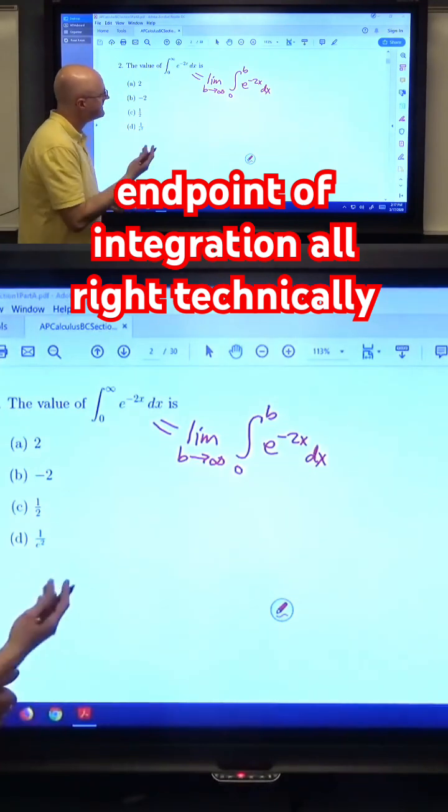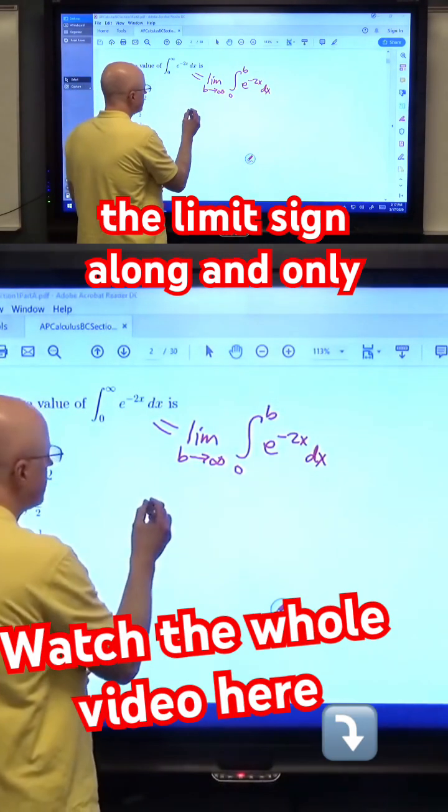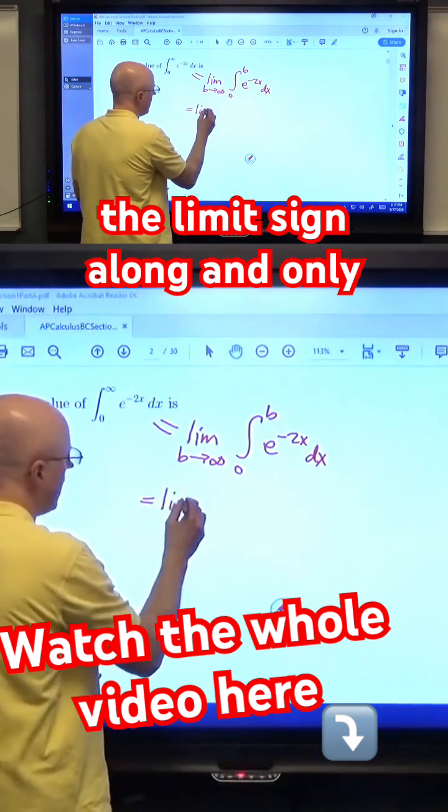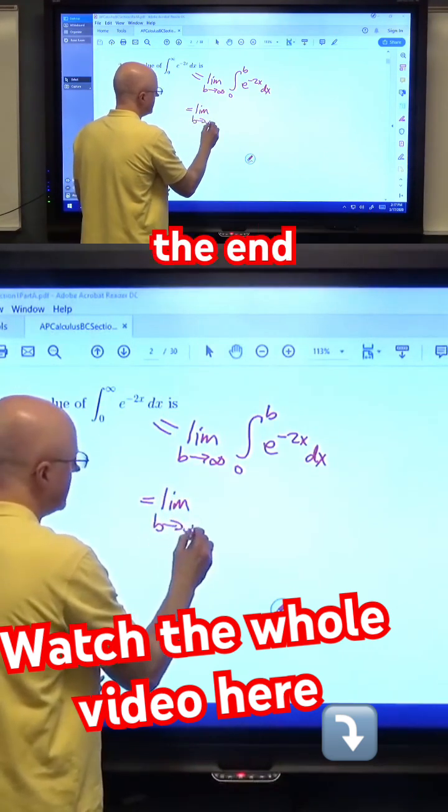All right? Technically it's a limit though. Just carry the limit sign along, and I'll only let B go to infinity at the end.